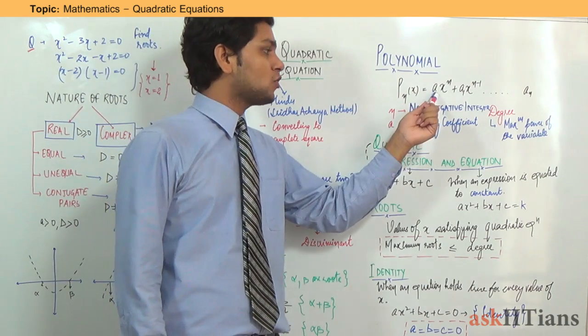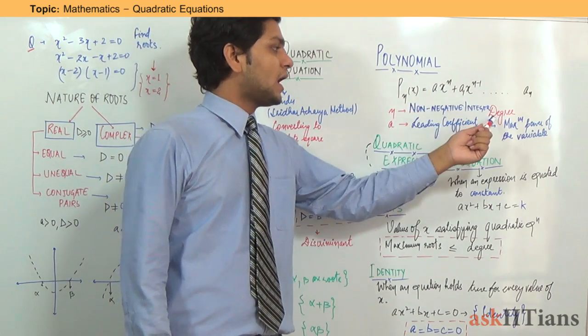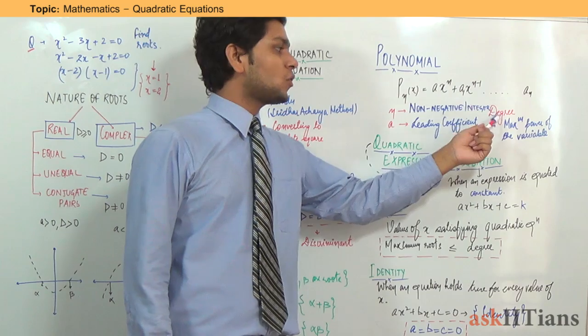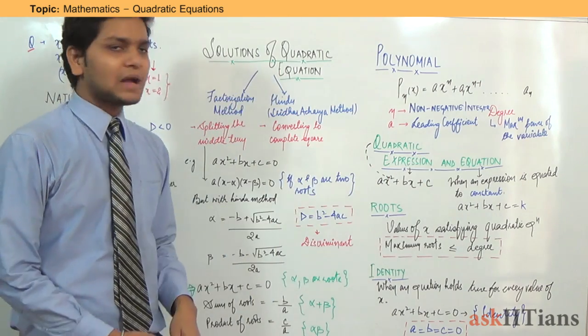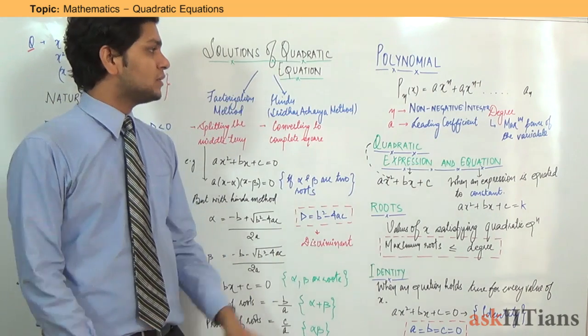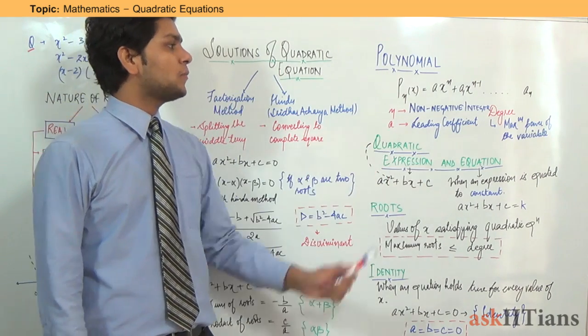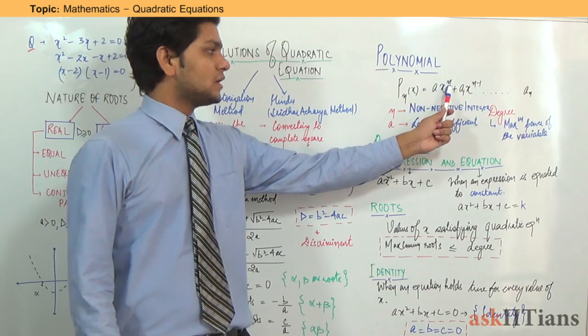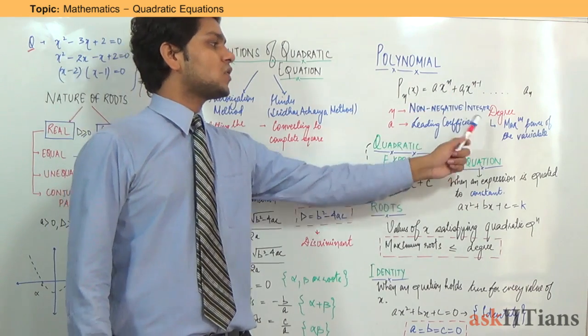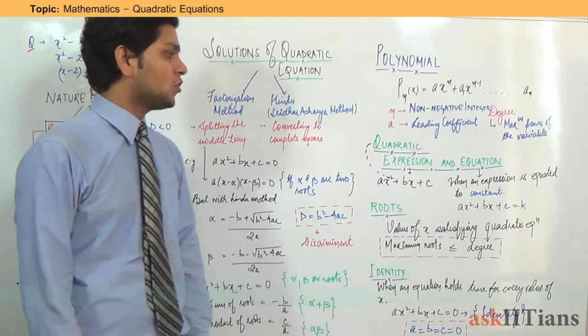n is called the leading coefficient, and there is another term called degree. What is degree? Degree is the maximum power of the variable which we have in a polynomial expression. So n is called the degree of the polynomial.